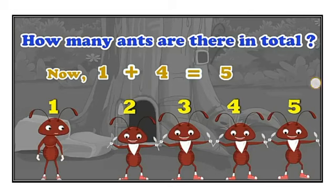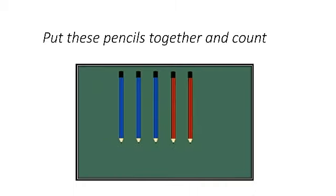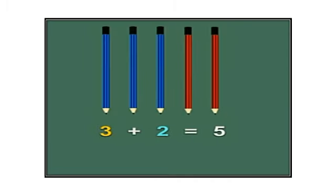Some more examples. There are two red pencils and three blue pencils. Let's put these pencils together and now count how many there are: one, two, three, four and five. So children, three and two is five — that is, three plus two is equal to five. And again, the sign of addition is plus, and five is called the sum. The addition sentence is three plus two is equal to five.